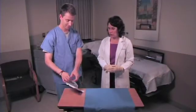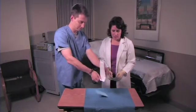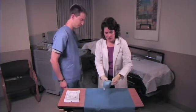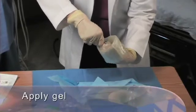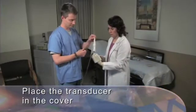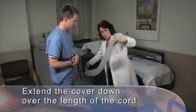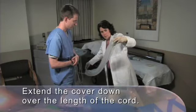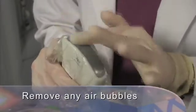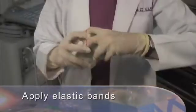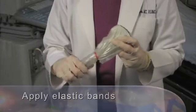Using the dual person approach to applying a general purpose transducer cover, the non-sterile person opens the procedure kit, placing it onto the sterile tray. The sterile person opens the sterile gel packet and creates an opening in the cover and applies gel. The non-sterile person places the transducer into the cover. The sterile person then extends the cover down over the length of the cord, ensuring proper sterile technique. Check carefully and remove any air bubbles that are between the transducer face and the cover. While remaining in the sterile field, apply enclosed sterile elastic bands to secure the cover in place.